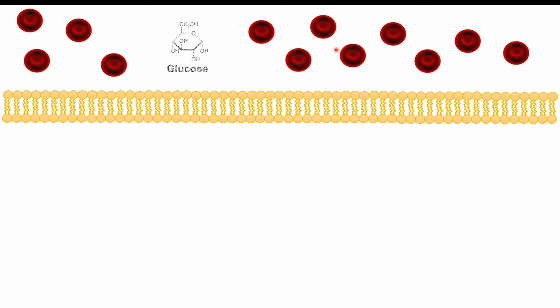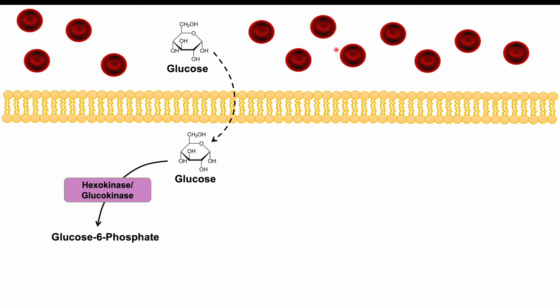Consider a cell: glucose is brought into the cell via GLUT transporters and normally acted on by hexokinase or glucokinase. Glucokinase is found in the liver and pancreatic beta cells, while hexokinase is in many other cell types. This phosphorylates glucose into glucose-6-phosphate, trapping it for glycolysis. High glucose levels, almost always associated with diabetes or insulin resistance, lead to increased glucose uptake into the cell.